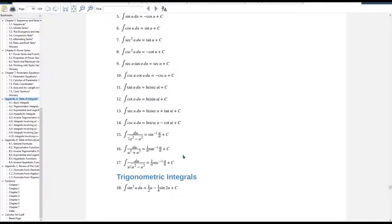It should be right down here. Oh, there it is, number 16. Terrific. So we got a squared plus u squared, it's 1 over a tangent inverse u over a.